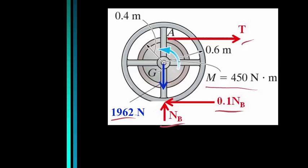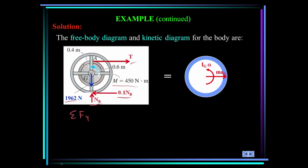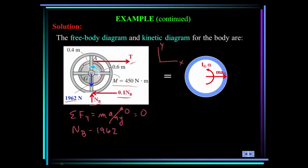Here is the free body diagram with the normal force, the frictional force, the tension in the rope, the weight, and the applied moment of 450 N·m. In this case, we know the wheel is slipping — the applied moment causes the wheel to turn counterclockwise and move to the right. Summing forces in y: N_b minus 1962 equals zero, so the normal force is 1962 N. The acceleration of the mass center equals the inner radius 0.4 m times alpha, because the angular acceleration wraps the wheel around the rope.